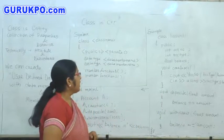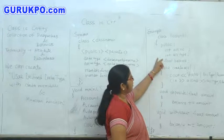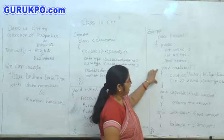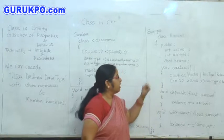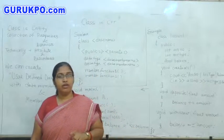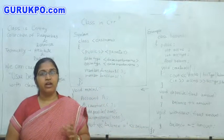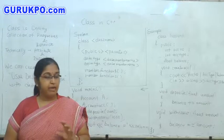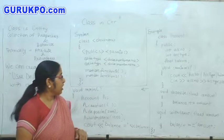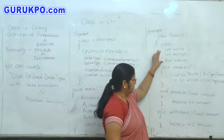See, here we have three data members, account number, account type and balance, and one function create account. This create account function, what it is doing? It just takes the account number, account type and balance and it just puts it in the data members.